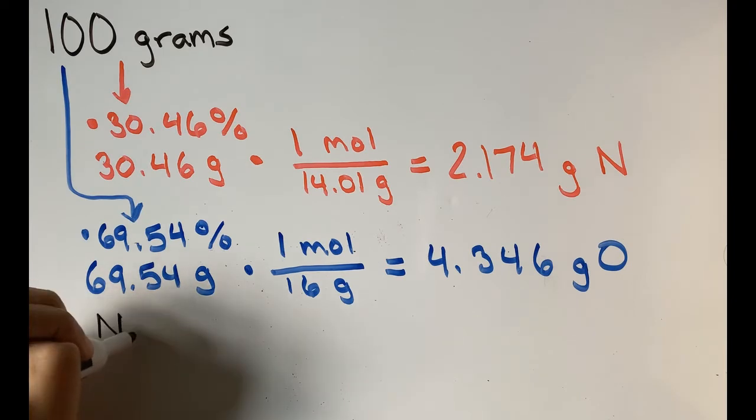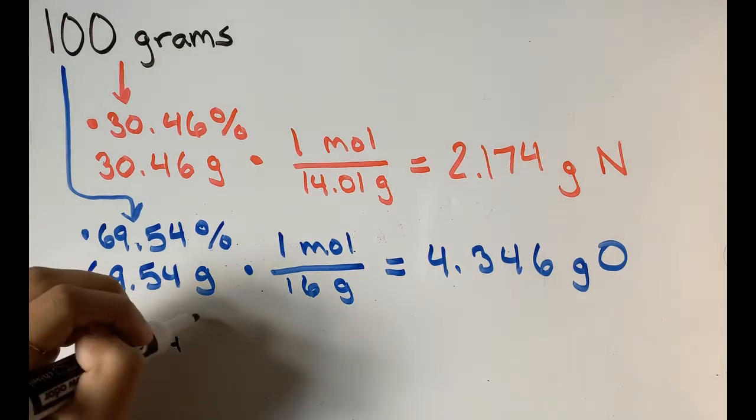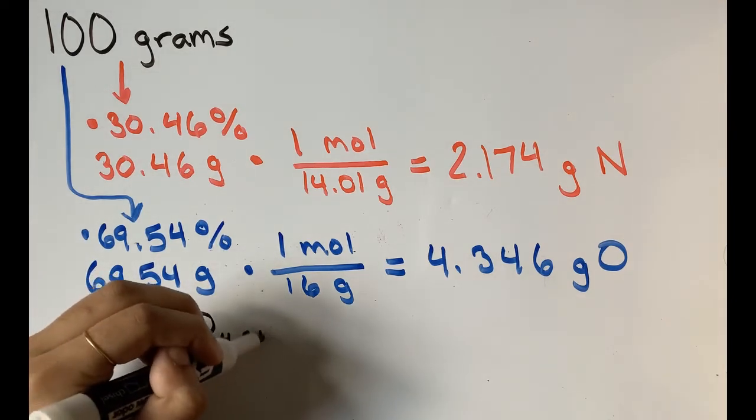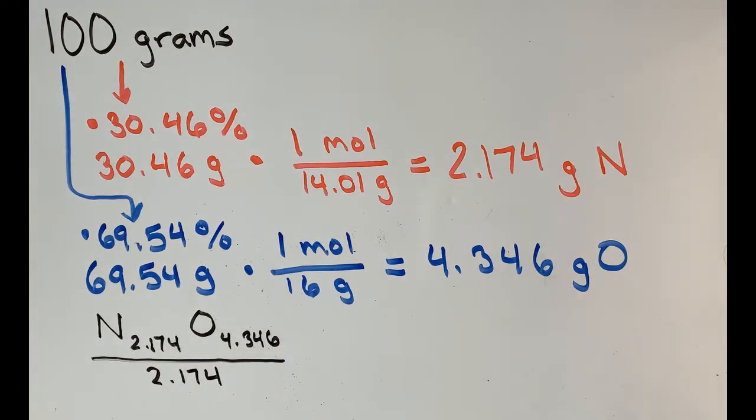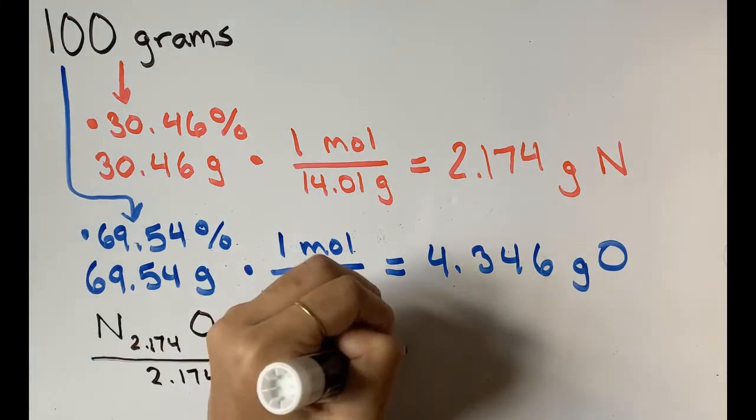This gives us an empirical formula of N2.174O4.346. This isn't very pretty, so we'll divide the whole thing by 2.174, and that gives us NO2.